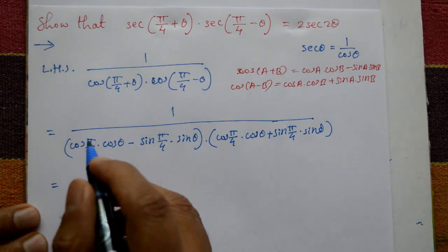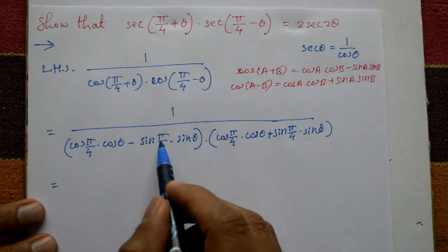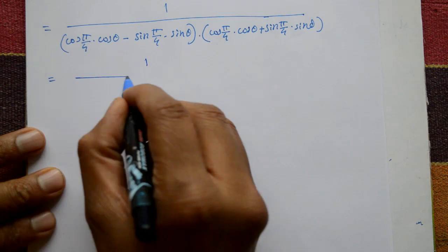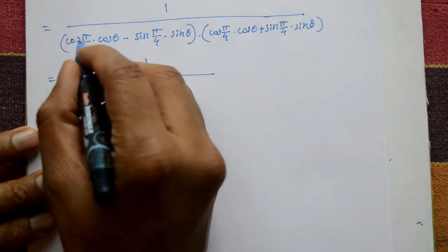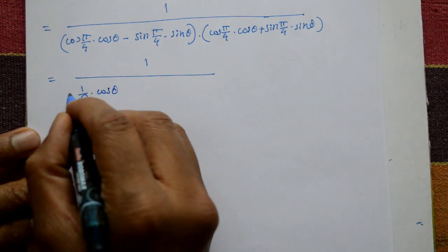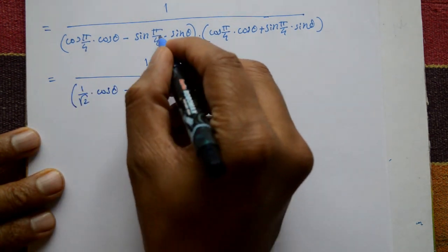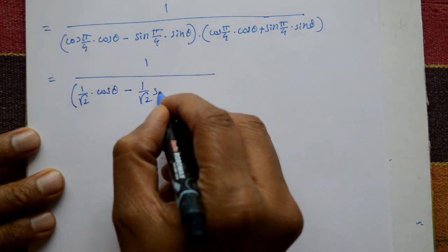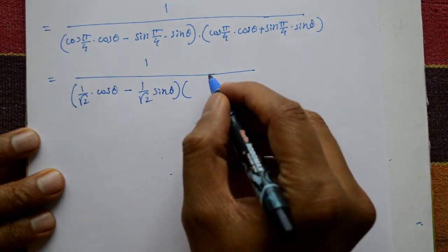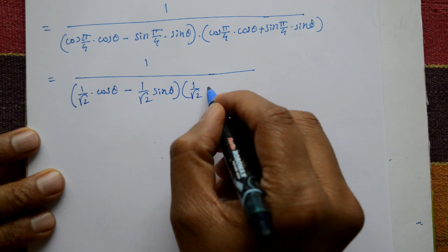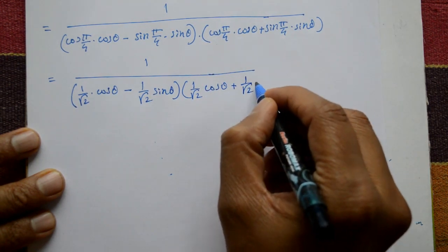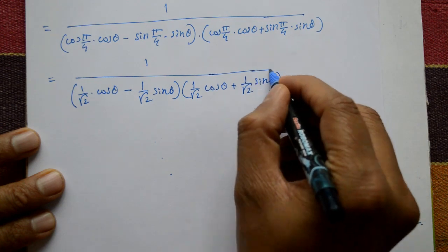Now, sin 45° and cos 45° are both 1/√2. Substituting: the first bracket becomes (1/√2)·cos θ − (1/√2)·sin θ, and the second bracket becomes (1/√2)·cos θ + (1/√2)·sin θ.